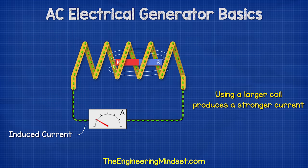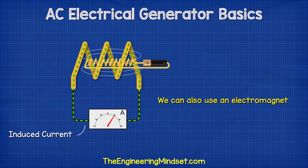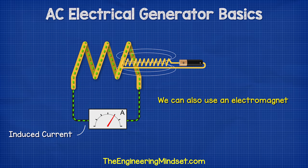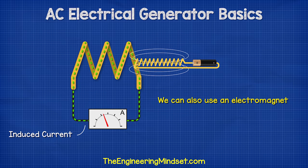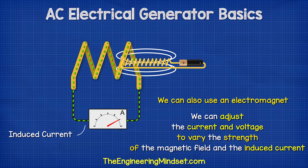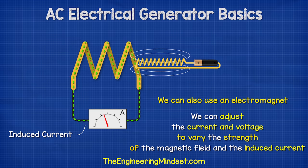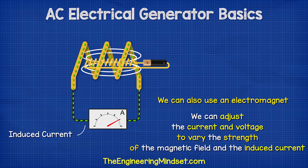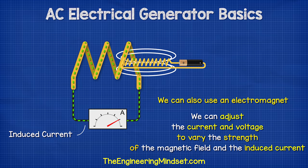Instead of using a permanent magnet, we could use an electromagnet. As we move this in and out, it will also generate an AC current in the coil. But with the electromagnet, we can adjust the current and voltage to vary the strength of the magnetic field, which lets us control how much current is generated in the coil.